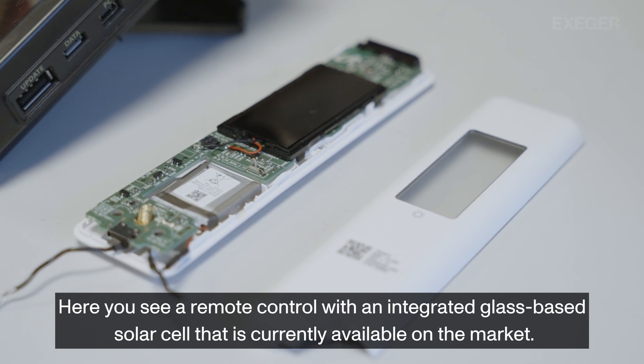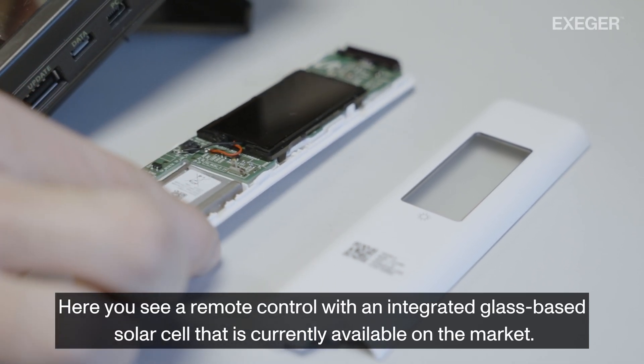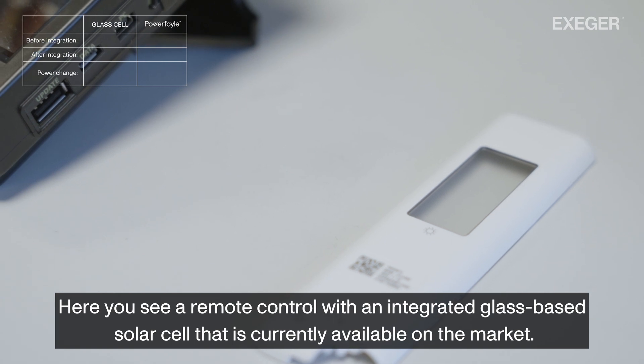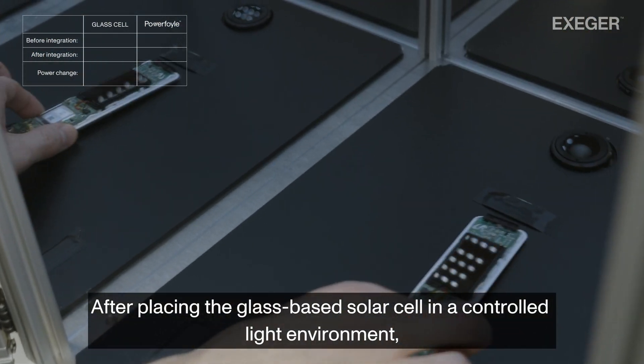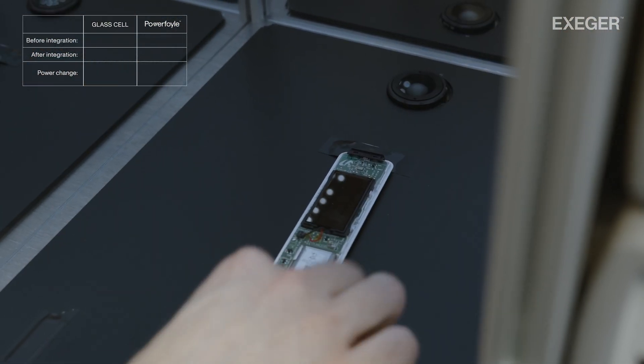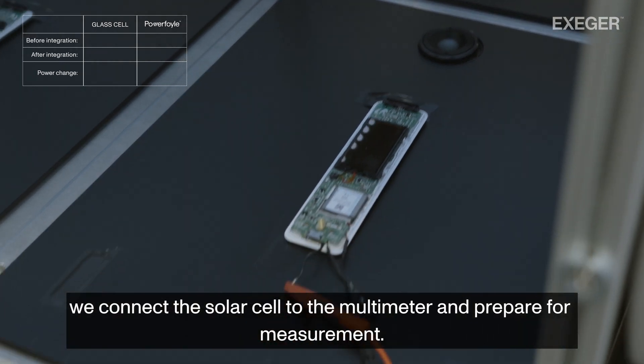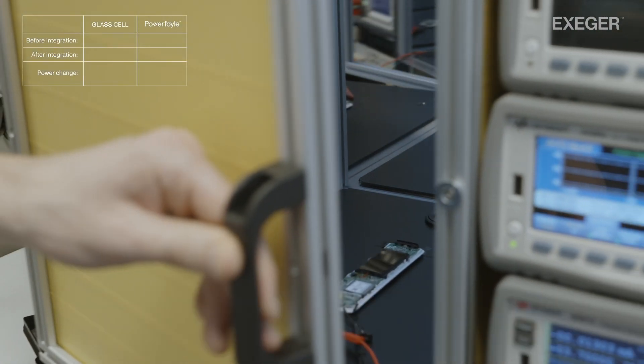Here you see a remote control with an integrated glass-based solar cell that is currently available on the market. After placing the glass-based solar cell in a controlled light environment, we connect the solar cell to the multimeter and prepare for measurement.